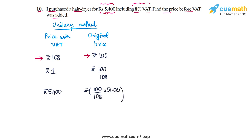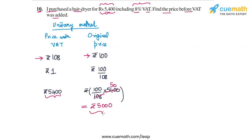So this is the expression for the original price. 5400 by 108 is equal to 50, and 50 into 100 is equal to 5000. So rupees 5000 is the original price. This means that for a price with VAT of rupees 5400, the original price is rupees 5000.